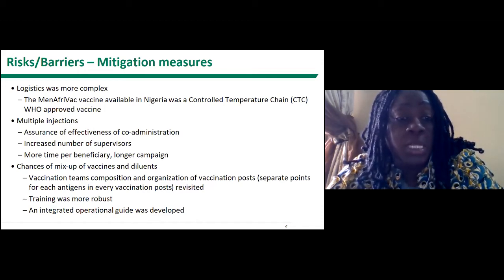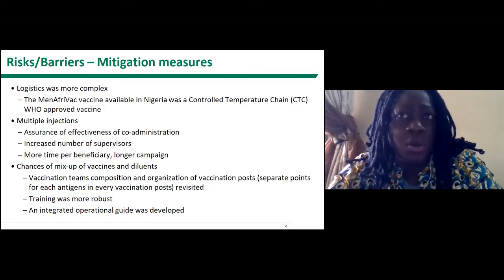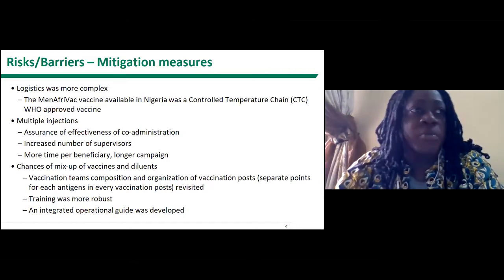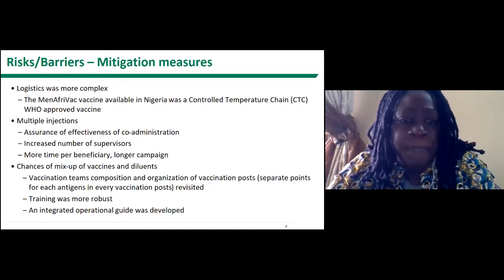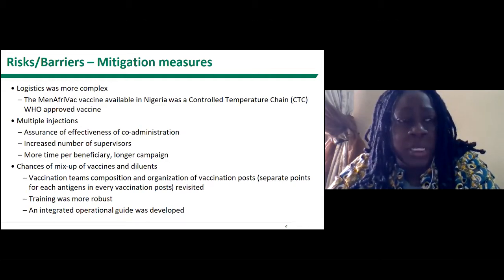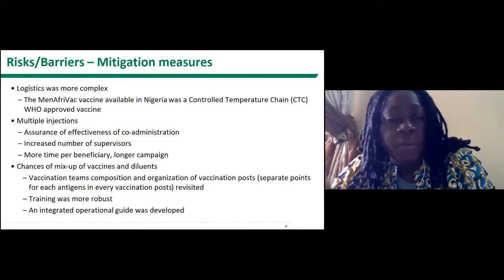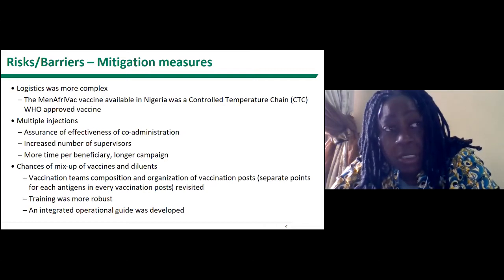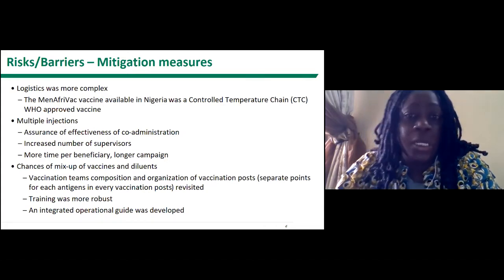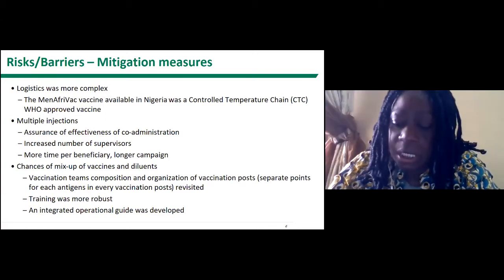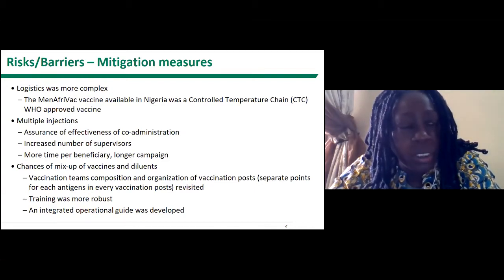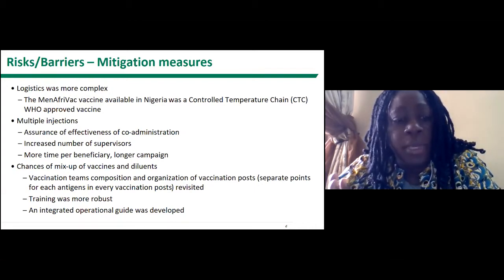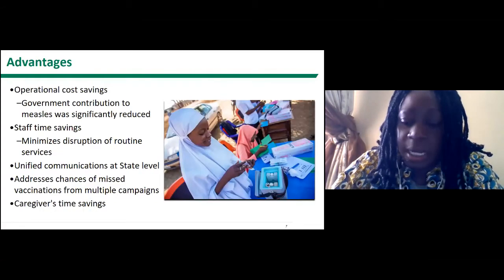The campaign duration was extended from five to eight days, and in some areas up to ten days. This saved time for beneficiaries — caregivers didn't need to return on separate occasions for MCV and meningitis vaccination. Reports of vaccine mixing/dilution errors led us to revisit team composition and vaccination post organization. Training was made more robust, with increased training days and a single integrated operational guide addressing all technical issues.